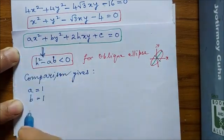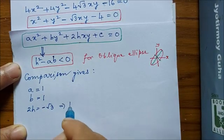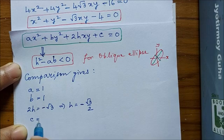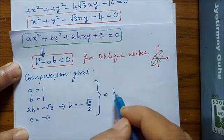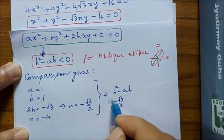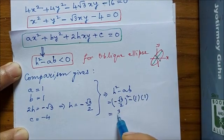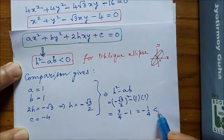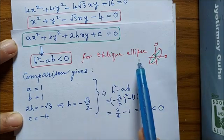A equal to 1, B equal to 1, 2H equal to minus √3, so H is equal to minus √3 by 2, and C is minus 4. So H² - AB equals 3/4 - 1 = -1/4. And this is less than 0, and this means the equation that we got indeed represents an oblique ellipse.